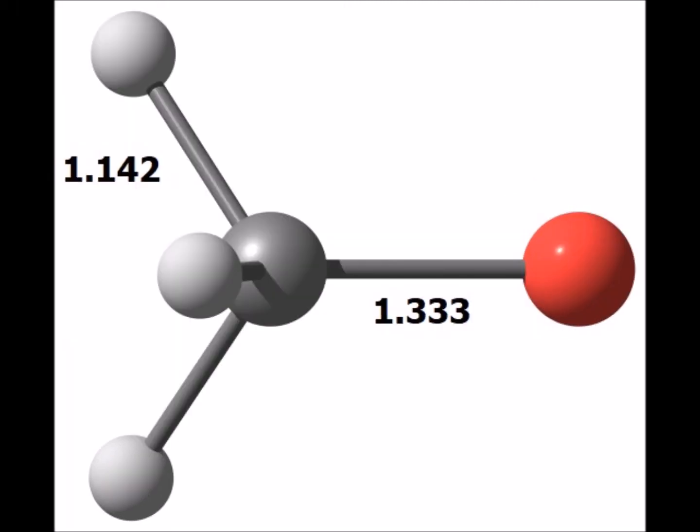The property we are exploring is the acidity of alcohols — the tendency for an alcohol such as methanol to lose H+, a proton, and thereby form its conjugate base, shown here: methoxide, with its computed structure.